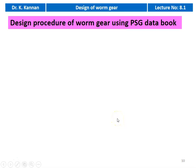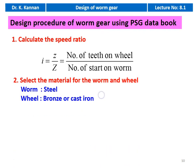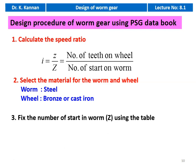Now we discuss the design procedure of the worm gear using the PSG design data book. First, calculate the speed ratio: I = z / Z, where small z is the number of teeth on the wheel and capital Z is the number of starts of the worm. Select the material — if not given in the problem, select material for the worm and the wheel. For the worm it is always steel; for the wheel, either bronze or cast iron. Fix the number of starts for the worm Z from the table.